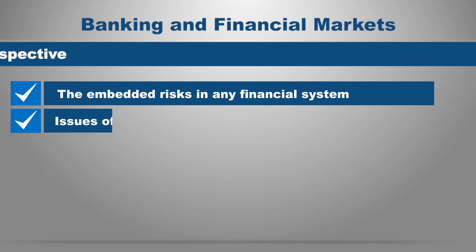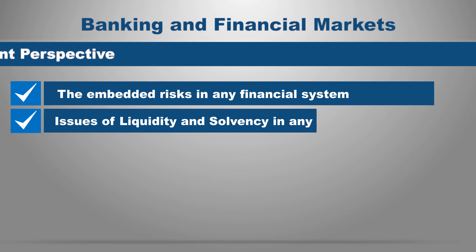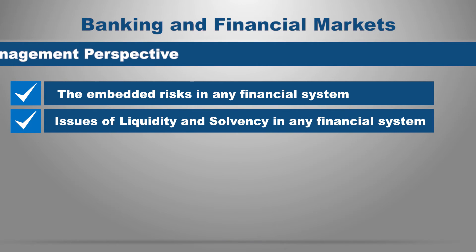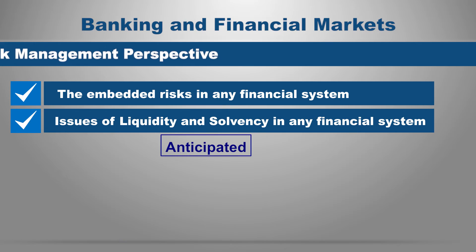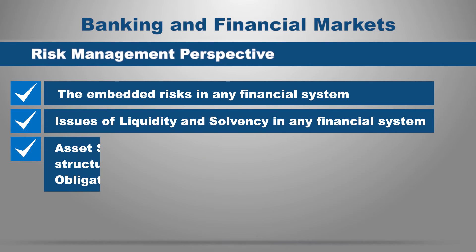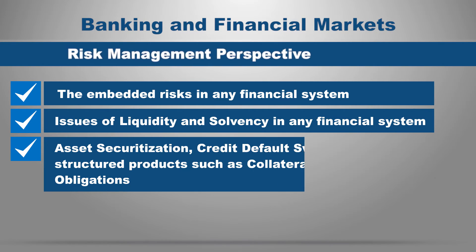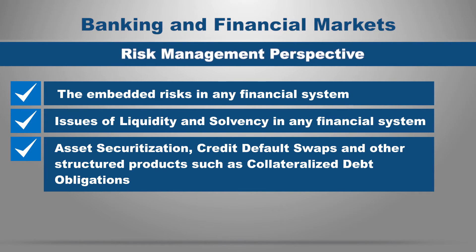We will also look at issues of liquidity and solvency in any financial system and how they are anticipated and managed. And then we will look at asset securitization, credit default swaps, and several other structured products, such as collateralized debt obligations, and how the uncontrolled proliferation of these structured products resulted in a massive asset bubble that eventually resulted in the global financial crisis and meltdown of 2008.